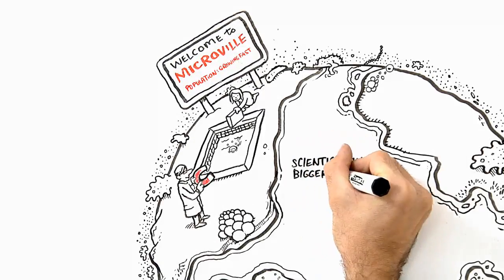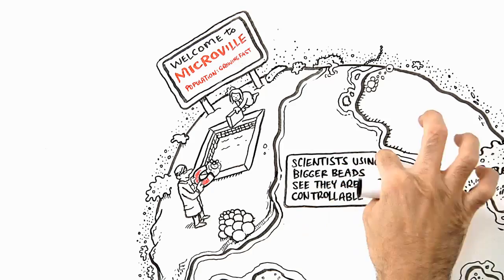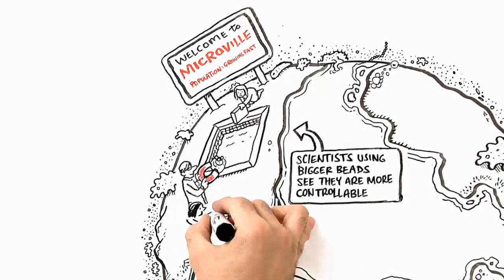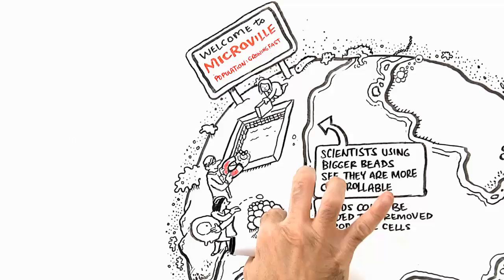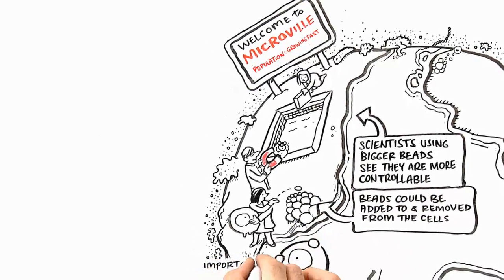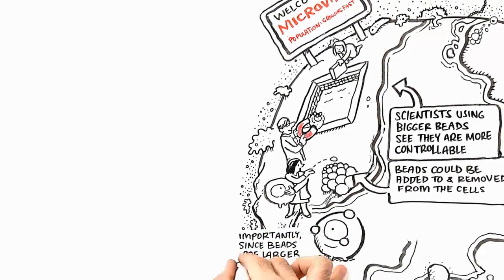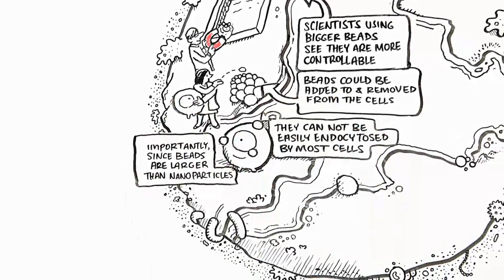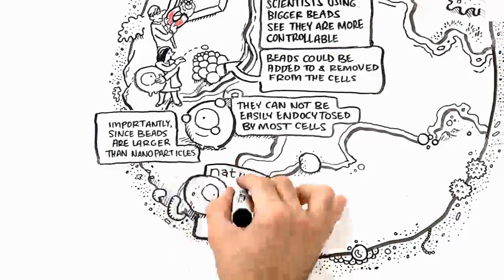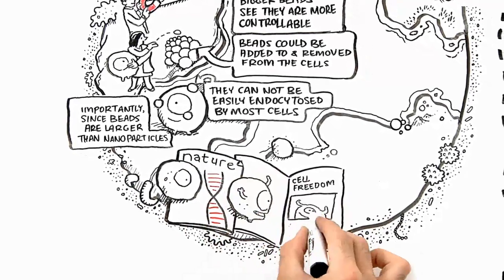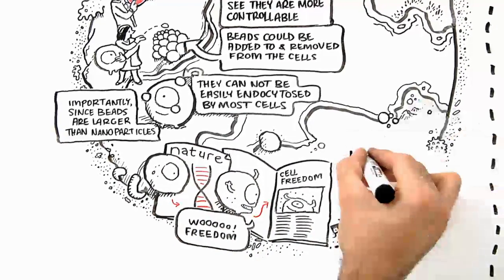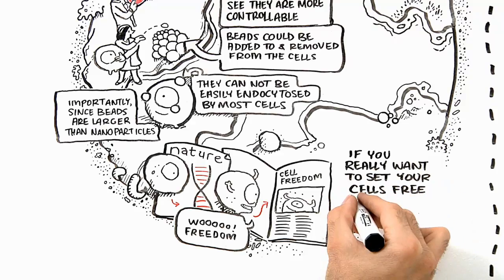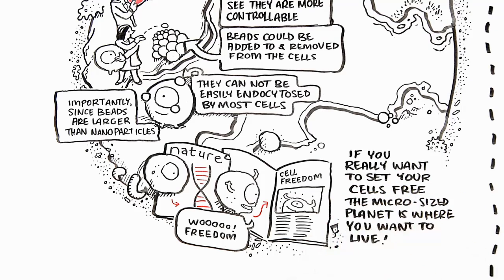Back on the microsize planet, scientists using bigger beads see that they are more controllable. The beads could be added to and removed from the cells. Importantly, since the beads are larger than nanoparticles, they cannot easily be endocytosed by most cells. And if you want to isolate cells that are particle or bead free, if you really want to set your cells free, then the microsize planet is where you want to live.